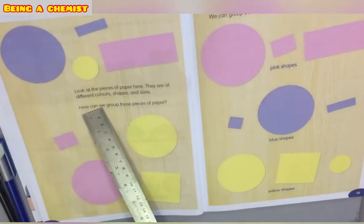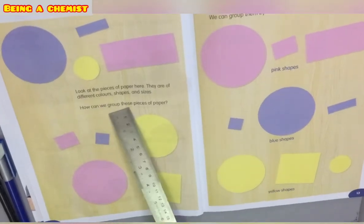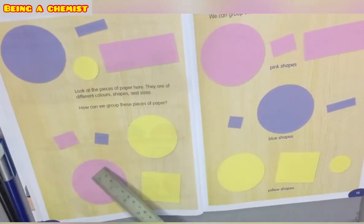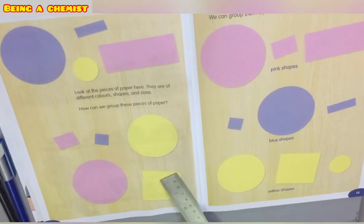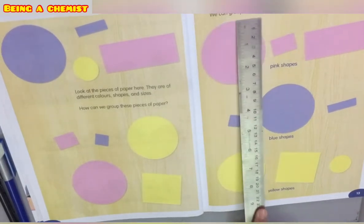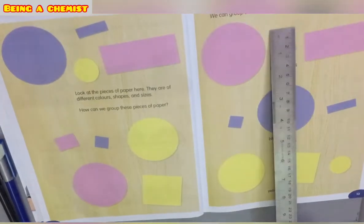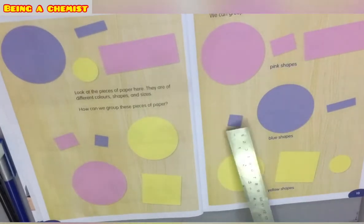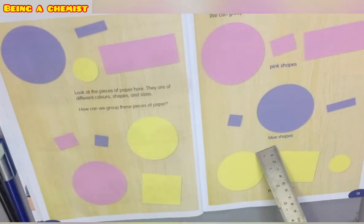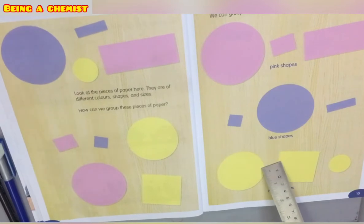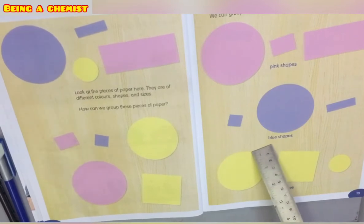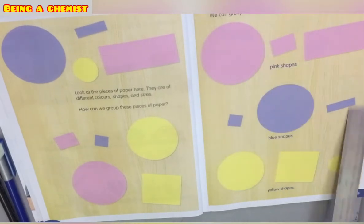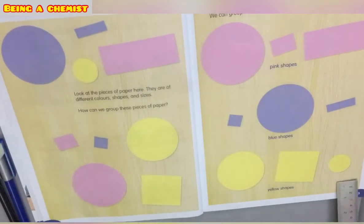Now the question arises: how can we group these pieces of paper? We can group them by color. As we have already discussed, we can group things on the basis of their color. How can we group them by color? As you can see here on this page of your science textbook, they have arranged them by color.